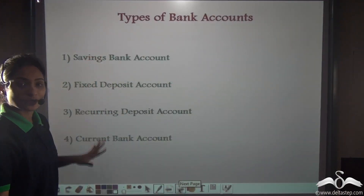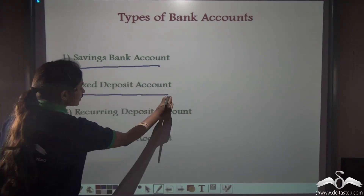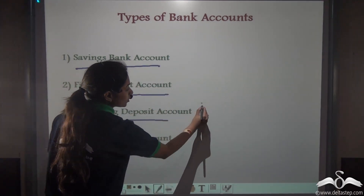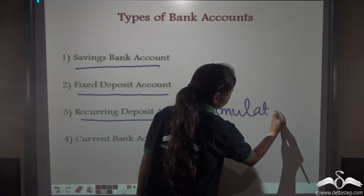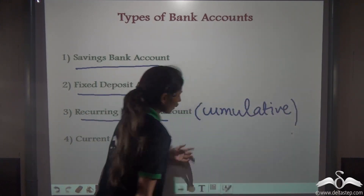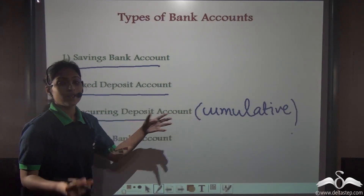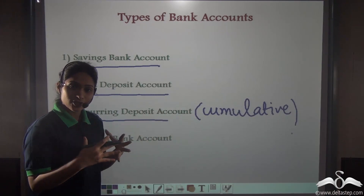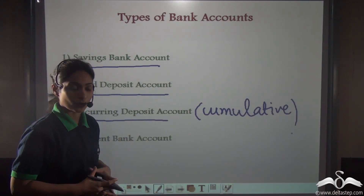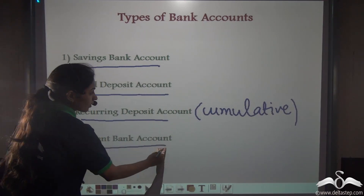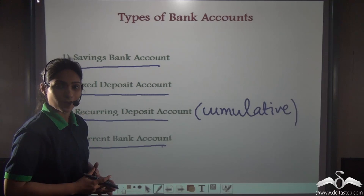So now you know what are the types of bank accounts: savings bank account, fixed deposit account, recurring — also known as cumulative deposit account. Why is it known as cumulative? It actually adds up your savings together and gives you back the amount with the interest you receive on it. And current bank account. These are the four types of bank accounts offered to you by the banks.